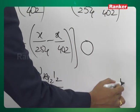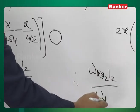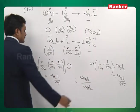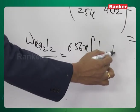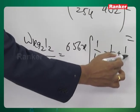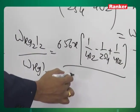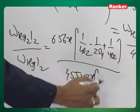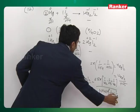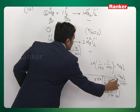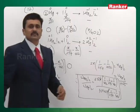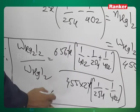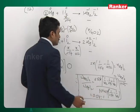By simplifying the expression for the weight ratio of mercurous iodide to mercuric iodide in terms of x, we get the ratio as approximately 0.513 : 1 or approximately 2 : 1.